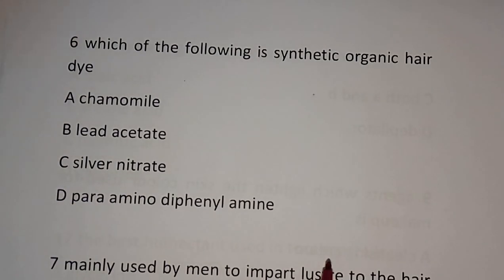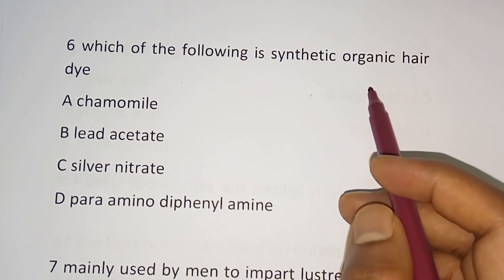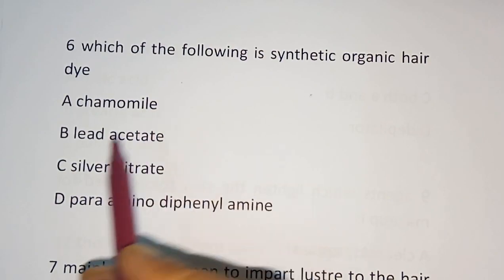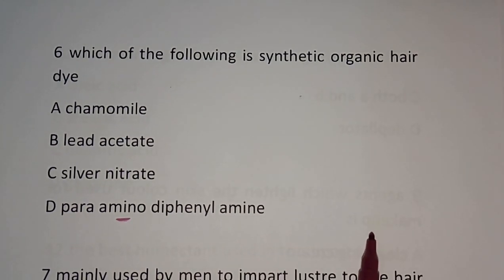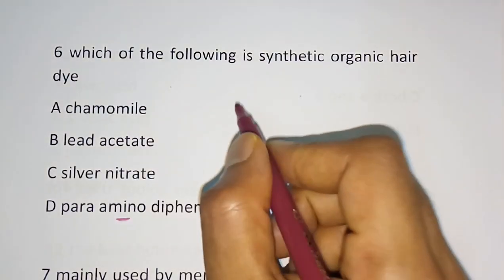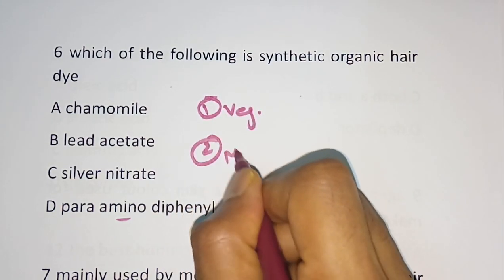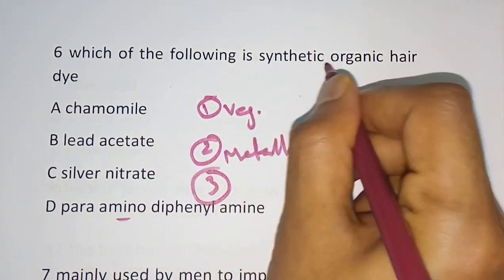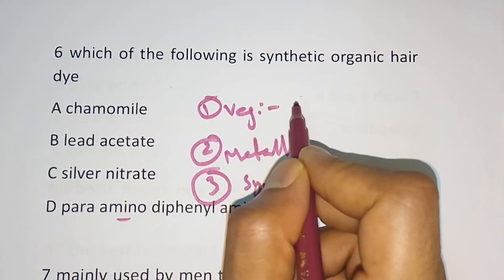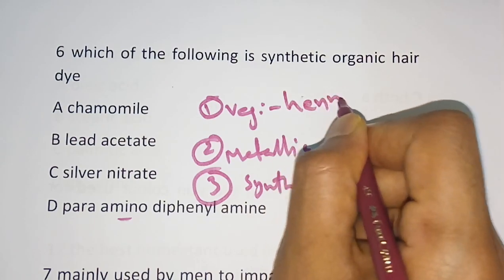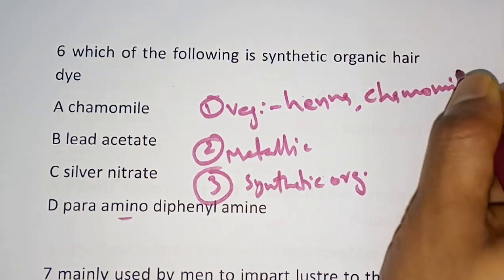Question number 6: Which of the following is a synthetic organic dye? Options are: Chamomile, Silver nitrate, Para-amino diphenyl amine. Hair dyes are classified into three classes: vegetable dyes, metallic dyes, and synthetic organic dyes. Examples of vegetable dyes are henna and chamomile.